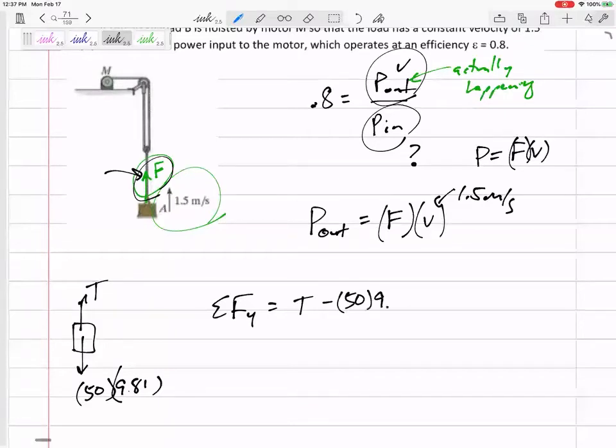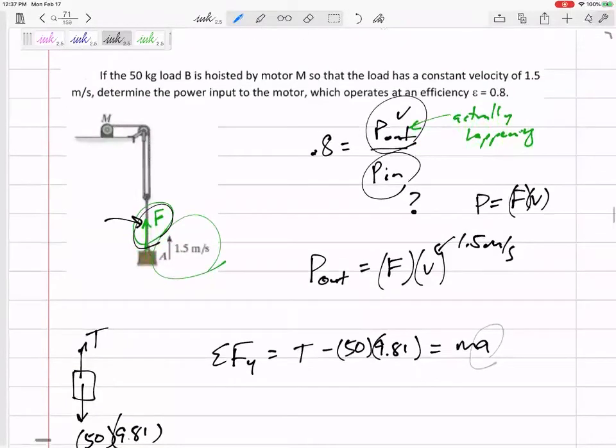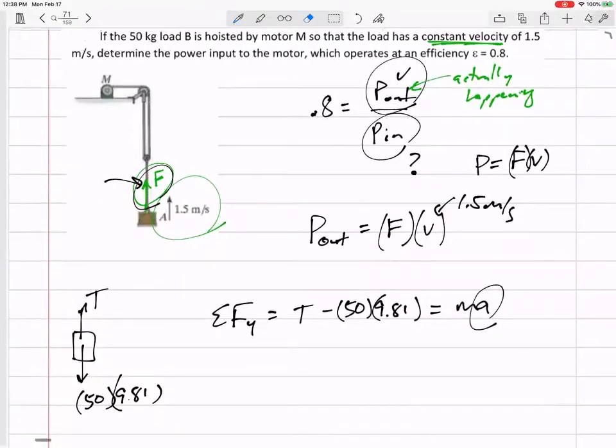T minus 50 times 9.81 equals MA. Is it accelerating in this direction? Constant velocity. So no, it is not accelerating in this direction. The tension right here would be 490.5 newtons.